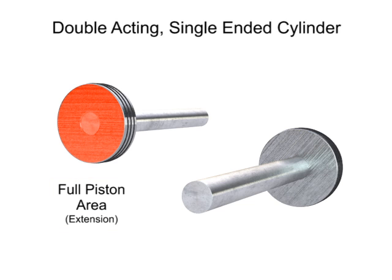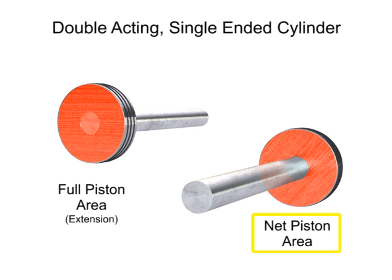The next significant working area is called the net area. This area is the size of the full piston area minus the area of the rod. The net area feels pressure when the cylinder retracts.